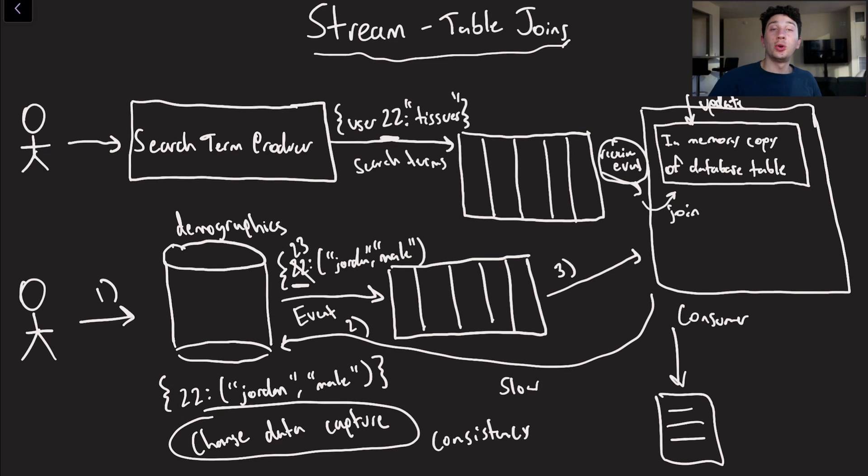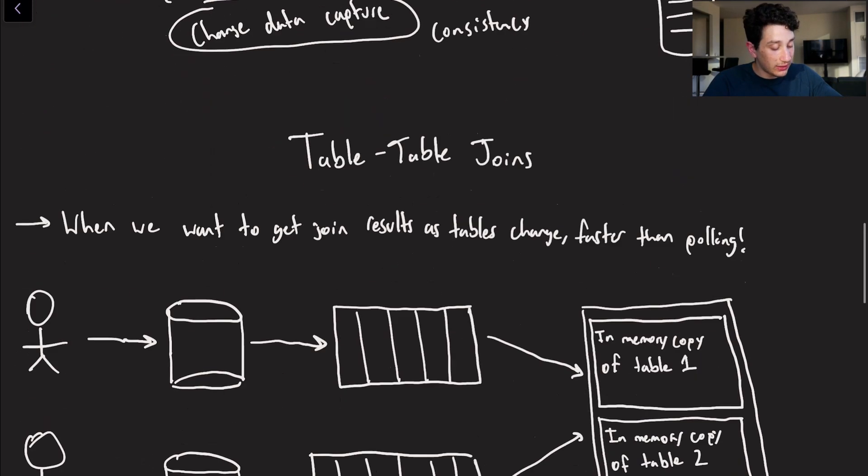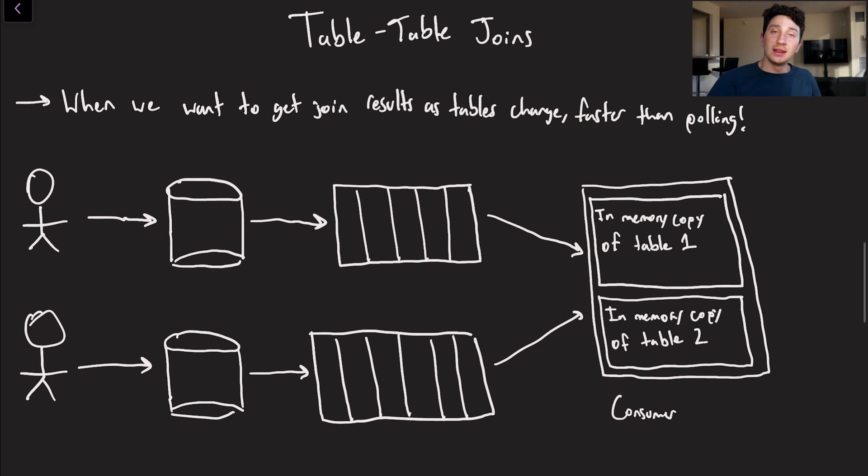So now we have one more type of join to touch upon, and that is actually going to be table-to-table joins. Now you may think to yourself, well, why the hell do we need streams for table-to-table joins? We can already just do that in a SQL database. And you would be completely correct. However, the fact of the matter is that database tables change over time, right? And so let's say we want to make sure that the result of our join is as up to date as possible at all times. Well, if we had a SQL database, the naive solution would just be polling.